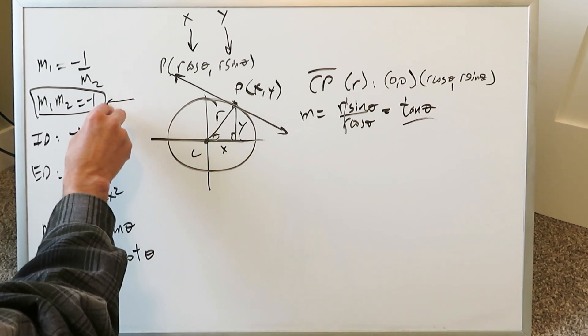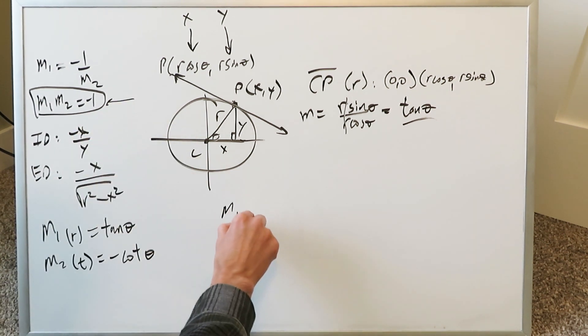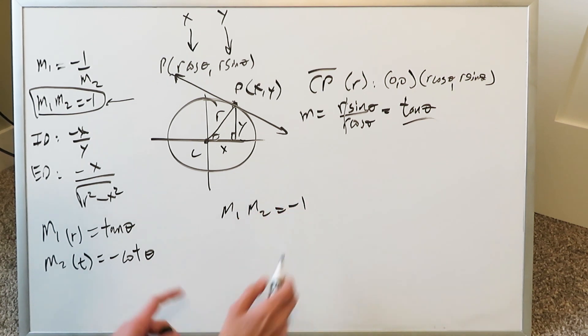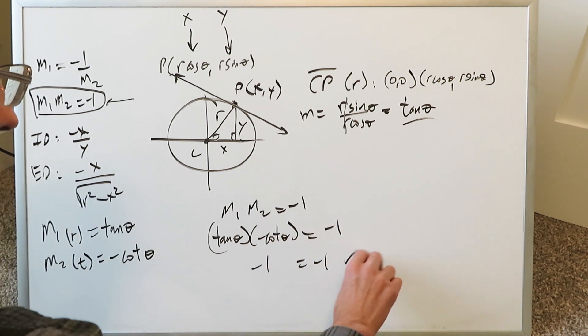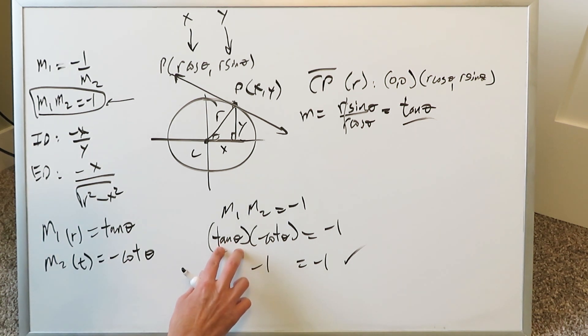Now we look right here at this specific relationship, m1 times m2 should equal to minus 1. m1 here is tangent theta, and m2 is minus cotangent theta, and you indeed will find this to be minus 1 is equal to minus 1. And you would be right, because the sine divided by cosine times cosine divided by sine would cancel out and generate a 1, then you still have a minus. You'll have a minus 1 equals minus 1.